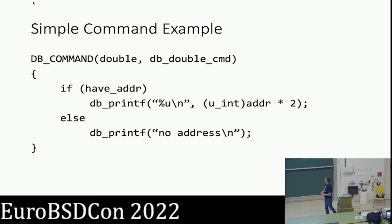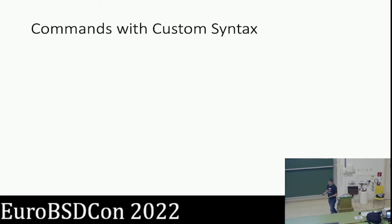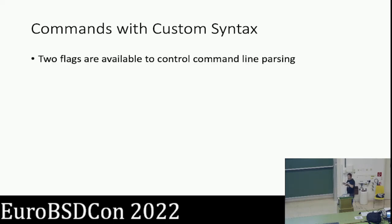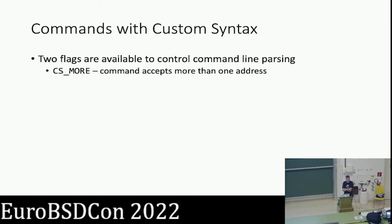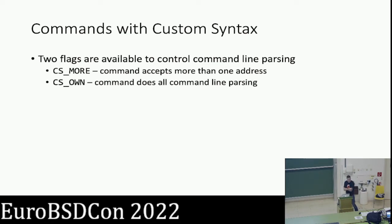That's a simple command — just parsing an address. The next thing to cover is commands that want to do something fancier: maybe you don't want just one address, you want to support more than one, or you want to handle some other kind of arbitrary stream. There are two flags you can set in the metadata associated with a command. The first is CS_MORE, which means you follow the normal syntax but can take additional arguments after it. The second is CS_OWN, which means you as a command function will completely own all the parsing yourself — you don't want DDB to parse anything for you.